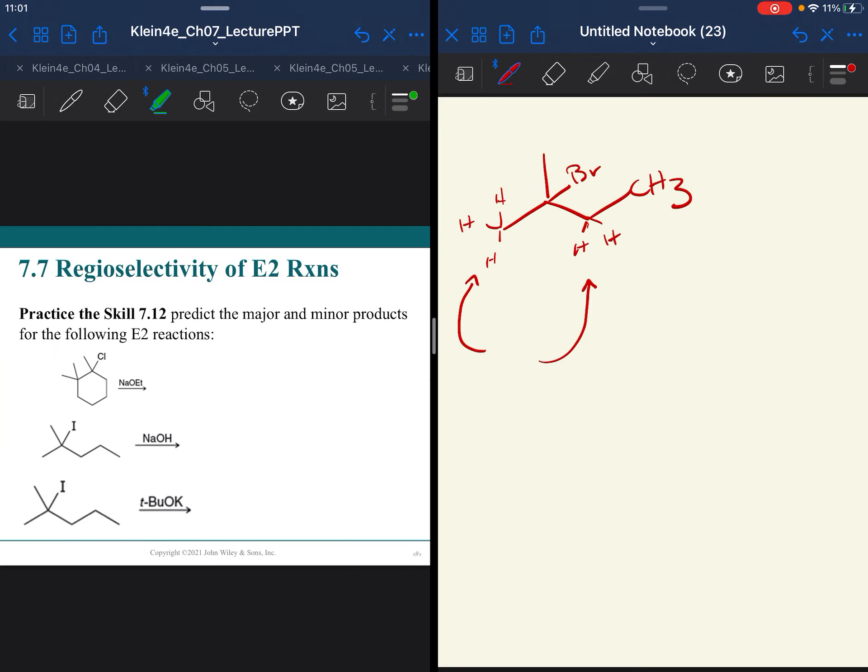So if we were going to predict some major products here, we want to take into account a couple things. Notice that we are just given tertiary alkyl halides right off the bat so that we don't even have to think about, is SN2 or E2 going to happen?